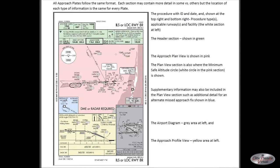At the top of every approach plate is the header section. You get some good information here: the appropriate frequency for the localizer, runway length, altitude of the airport, and so on.